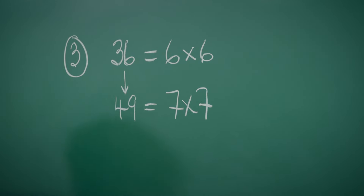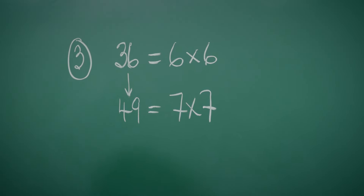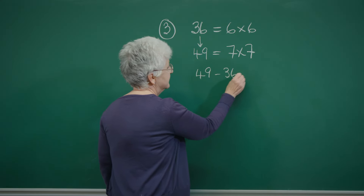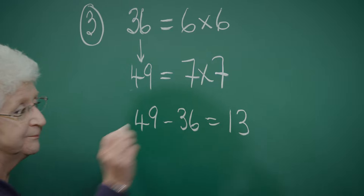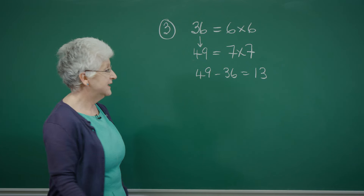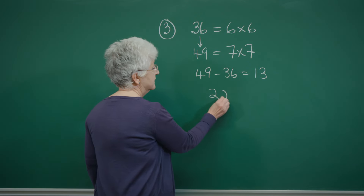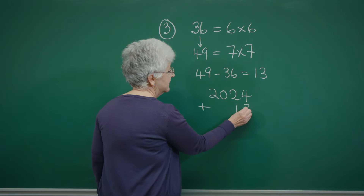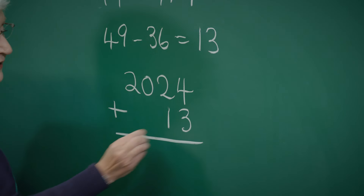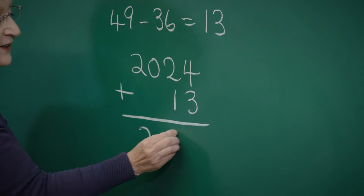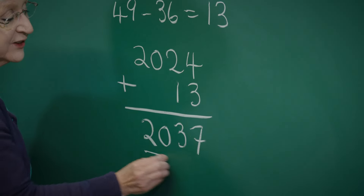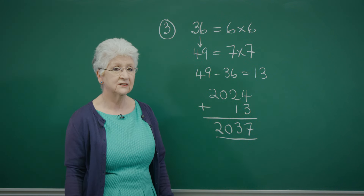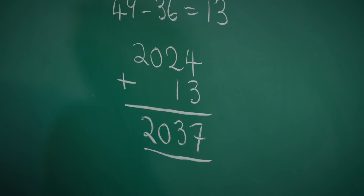We're going from 36 to 49, and 49 minus 36 is 13. This year is 2024, so we add 13 years on to 2024 and we get 2037. That's our answer — 2037 is the next time that Jill's age will be a square number.